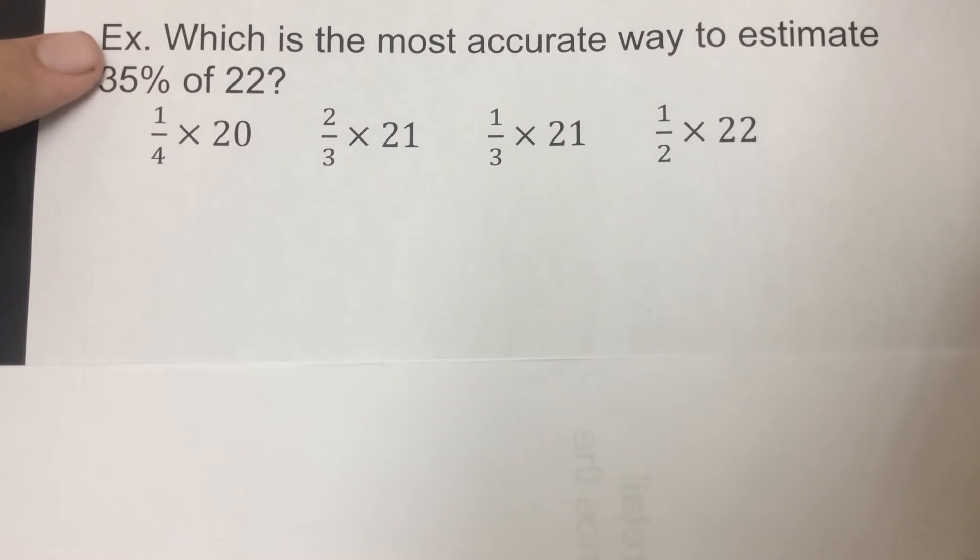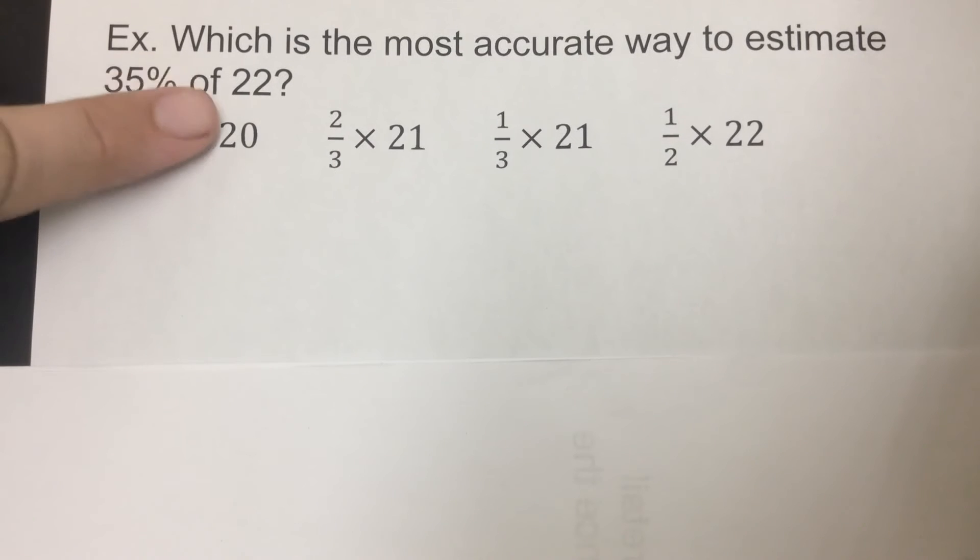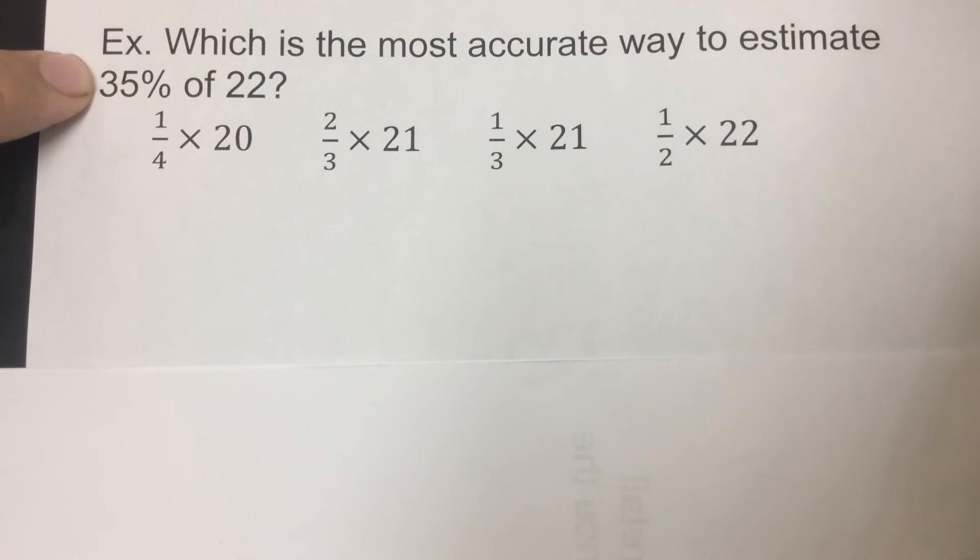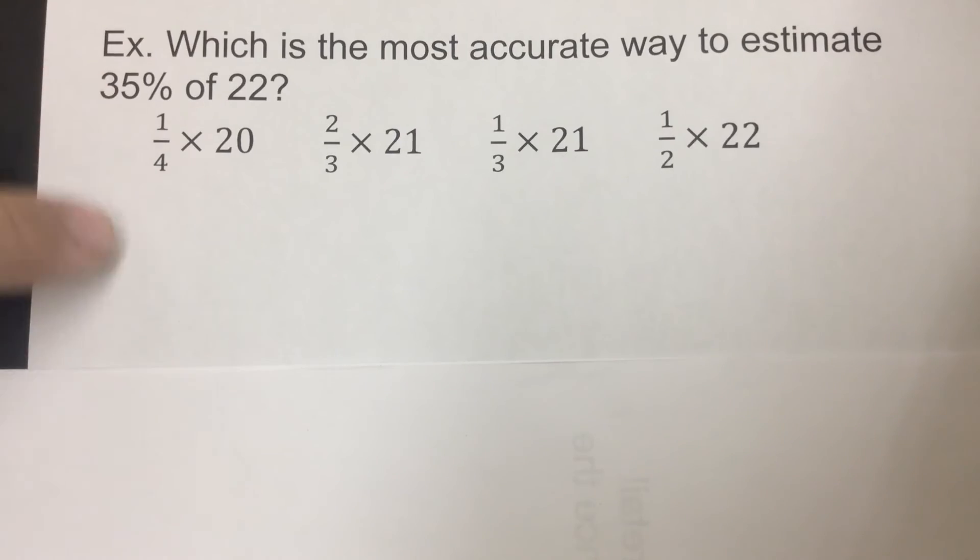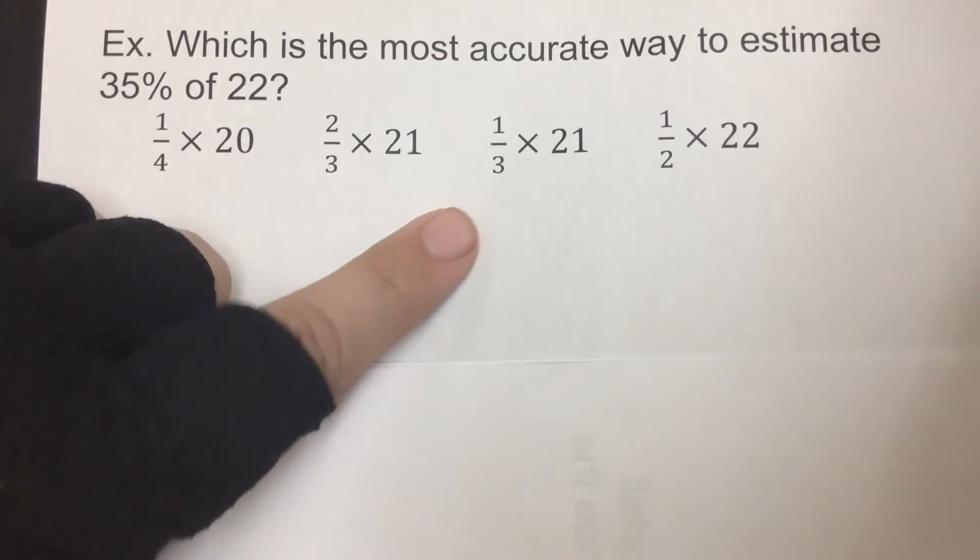Generally, if we round this down, we're gonna round this one up. Now this one's kind of the oddball because 35% is one-third and nothing else is close to a third, so we're gonna stick with this one here.